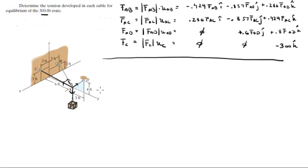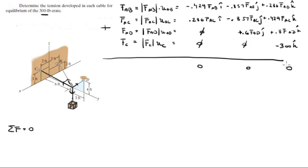Now the problem becomes clearer. In statics, the sum of forces equals zero. Adding all force vectors together, all i-components sum to zero, all j-components sum to zero, and all k-components sum to zero. This gives us three equations to find our three unknowns.